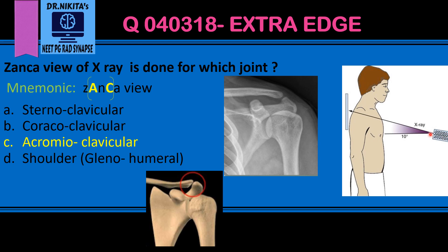To take this X-ray, the X-ray beam is angled cephalad at 10 degrees and centered on the acromioclavicular joint. Basically, it is an anteroposterior (AP) view. Remember the Zanka view mnemonic: A and C — acromioclavicular joint.